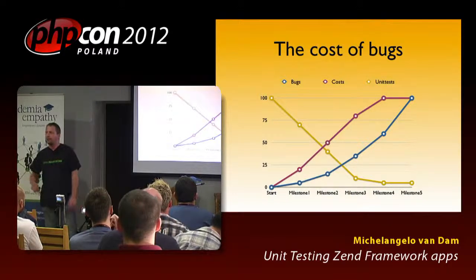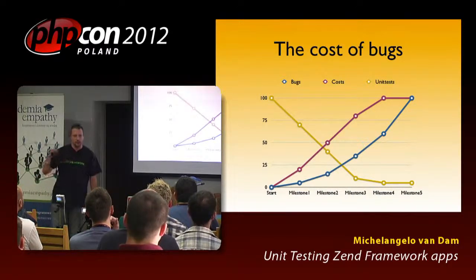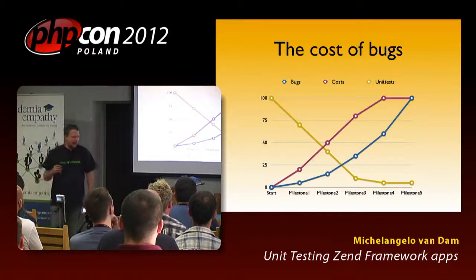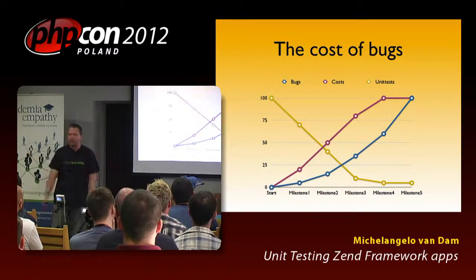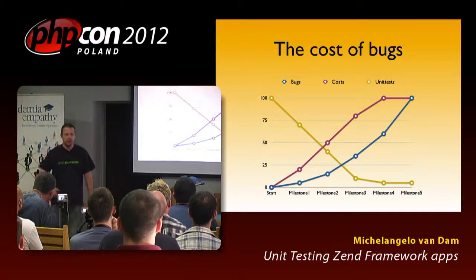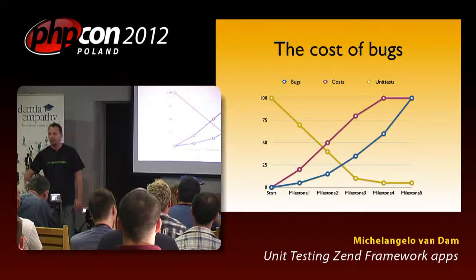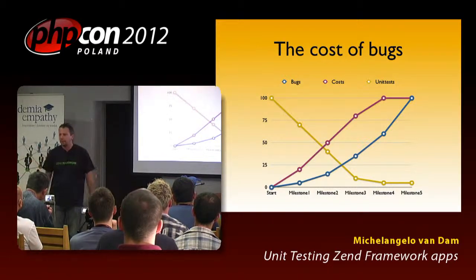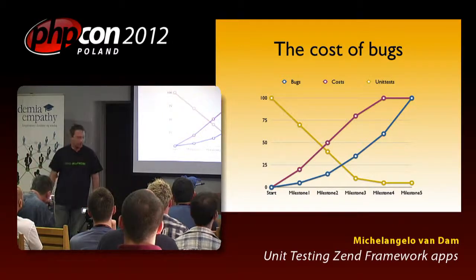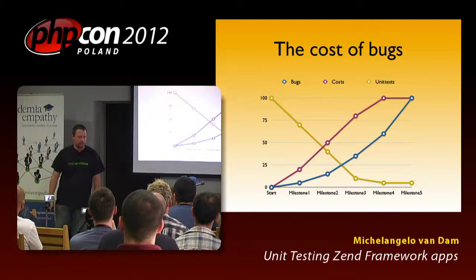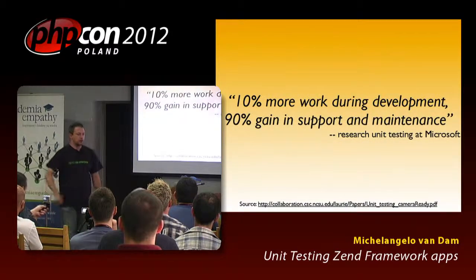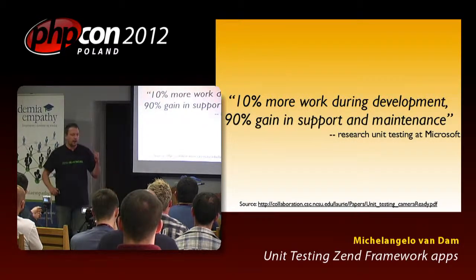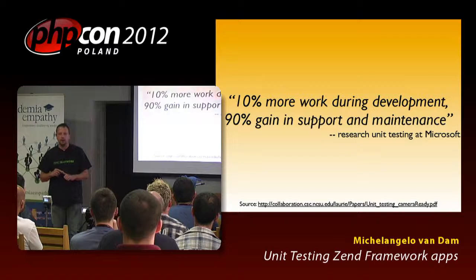The problem is that if you started a project, whether it's a new project or you're thrown into one that's already existing, in the beginning there's no cost because everything has to start up. You keep on maintaining more bugs and issues and problems, and by the time you're almost up to milestone five, you reach the maximum capacity of your team and you're kind of stuck. With unit testing in place, you can actually lower the amount of bugs — and it's a proven fact. 10% more work during development is a 90% gain in support and maintenance, done as individual research of unit testing within Microsoft.